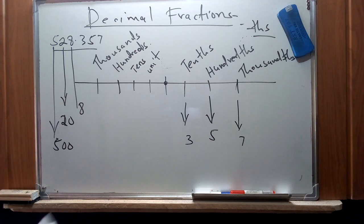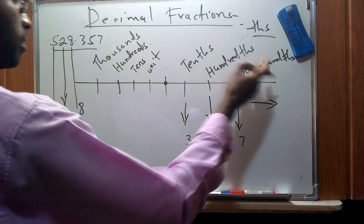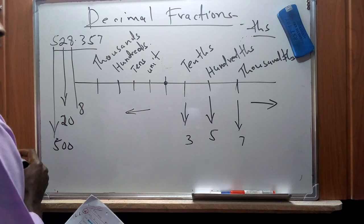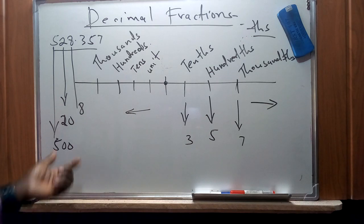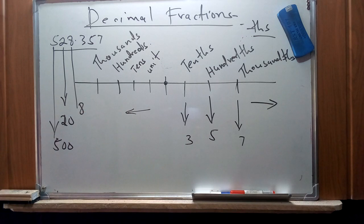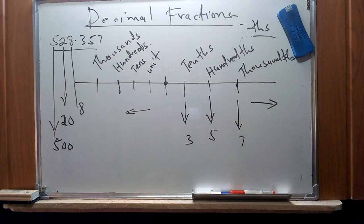Moving towards the right side increases the value of the decimal places in terms of quantity, while moving towards the left side increases both the quantity and the value of the number. The importance of decimal fractions is that, for the modern-day system, they simplify calculations. Scientists use the metric system, which is essentially based on decimal fractions.